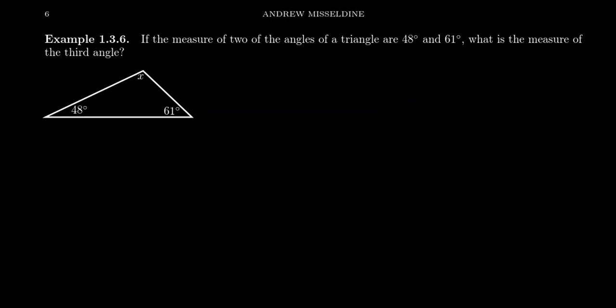Let's see an example of such. If the measure of two of the angles of a triangle are given as 48 degrees and 61 degrees, what is the measure of the third angle? This is a calculation we do in trigonometry all the time. So what's the measure of angle X right here? Well, we have that 48 degrees plus 61 degrees plus X degrees is equal to 180 degrees.